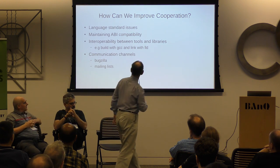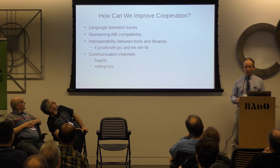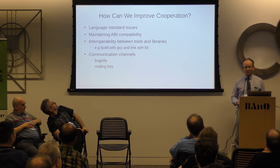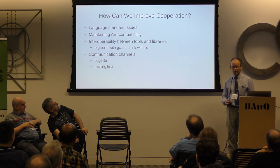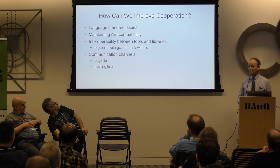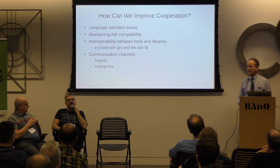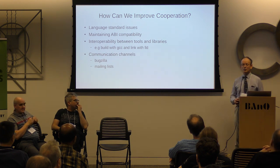The areas we identified for cooperation were: language standardization, maintaining ABI compatibility, interoperability between tools and libraries so it doesn't matter which compiler or linker you use — it should all work nicely — and what more communication channels we can open up to make sure the two communities actually talk effectively to each other. Anyone like to kick off with some comments or suggestions?